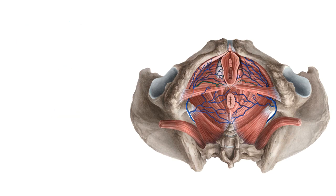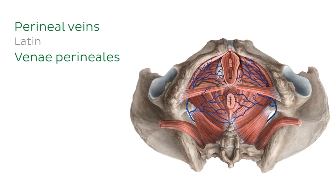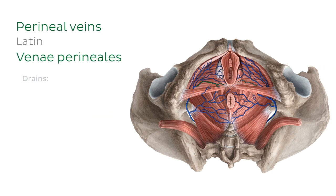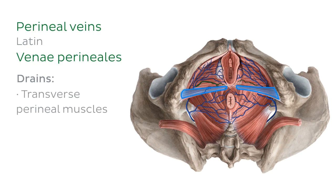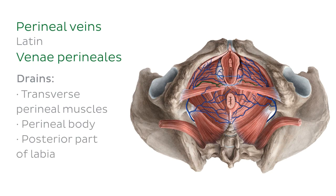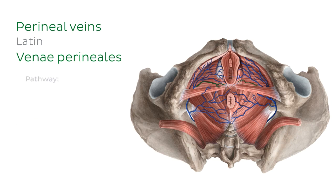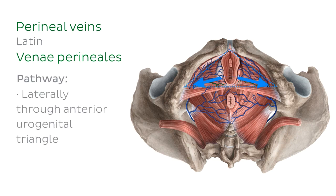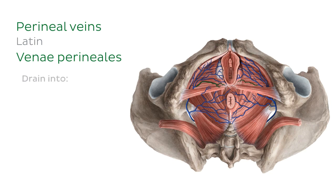The perineal veins drain blood from the transverse perineal muscles, the perineal body, and the posterior labia. The perineal veins course laterally through the anterior urogenital triangle to drain into the internal pudendal vein.